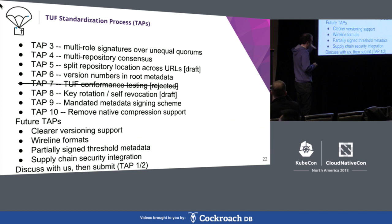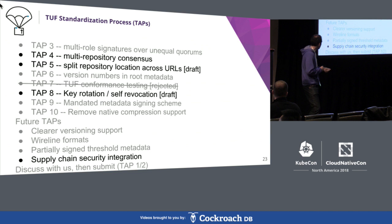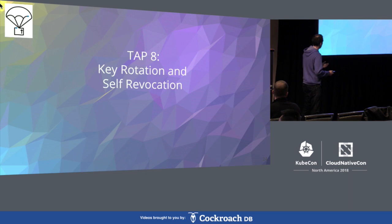I'm going to walk you through four different things that have made it into TUF and give you a glimpse of what our community is like and what it's like to contribute in this space. The first thing I'm going to talk about is a TAP we're currently finalizing: TAP 8. It deals with key rotation and self-revocation.